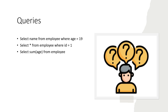Throughout this discussion we are going to consider three types of queries and look at how row-oriented versus column-oriented works, because that will bring clarity in terms of efficiency. The three queries are: one, a simple selection of the name column from the employee table where age is 19; two, selecting all columns from the employee table where id is 1; and three, using an aggregate function — doing a sum of the ages from the employee table for all employees.